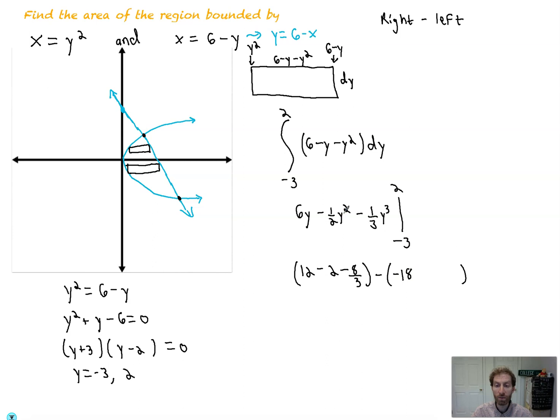Then we're going to evaluate the second part here. Negative 3 times 6 is negative 18. Negative 3 squared is 9 times minus 1 half is minus 9 halves. And then negative 3 cubed is negative 27 divided by 1 third, or times 1 third, is negative 9. Minus that is plus 9.